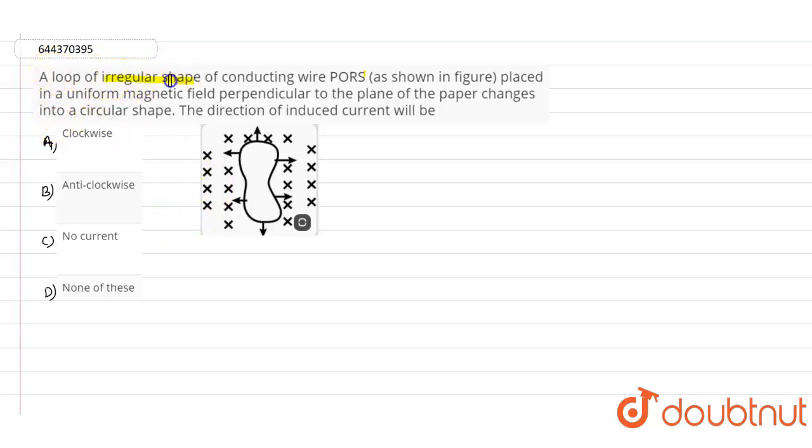So here in this question, it is given that a loop of irregular shape of conducting wire PQ and RS are placed in a uniform magnetic field perpendicular to the plane of the paper, and changes into a circular shape. The direction of the induced current will be?